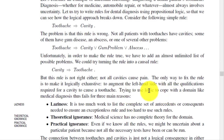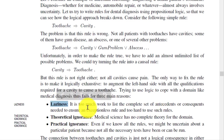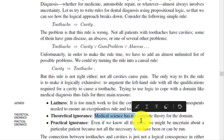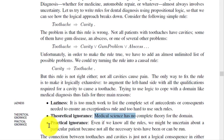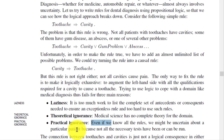Trying to use logic to cope with a domain like medical diagnosis fails for three main reasons. First, laziness — it is too much work to list the complete set of antecedents or consequents needed to ensure an exceptionless rule. Second, radical ignorance — medical science has no complete theory for the domain. Third, practical ignorance — even if we know all the rules, we might be uncertain about a particular patient because not all necessary tests have been or can be run.